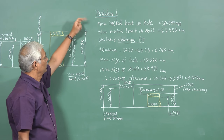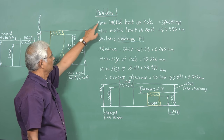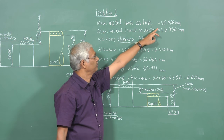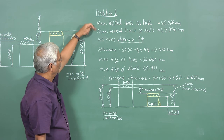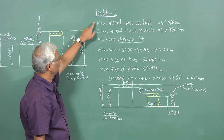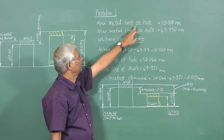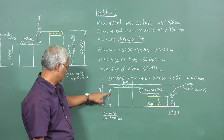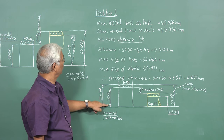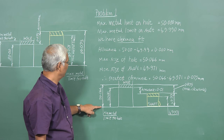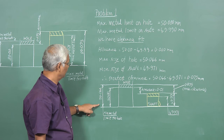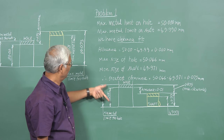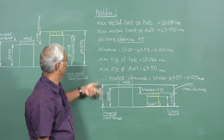In the problem, the basic size of the shaft and hole are given as 50mm. The limits for upper and lower limits for both hole and shaft are mentioned. The maximum metal limit for the hole is 50mm, and the minimum metal limit for the hole is 50.046mm.